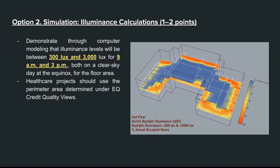For option two, illuminance calculations: demonstrate through computer modeling that illuminance level will be between 300 lux and 3,000 lux for 9 a.m. and 3 p.m., both on a clear sky day at Equinox for the floor area. Healthcare projects should use the perimeter area determined under EQ Credit Quality Views.